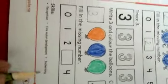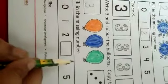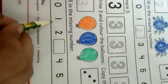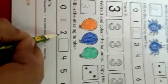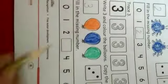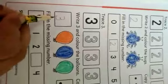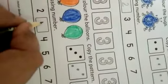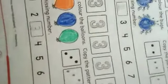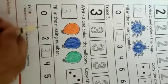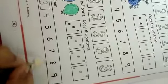So now come at the fill in the missing numbers. Zero, one, two and four. And our box is empty. So what will we write here? Which number is missing in this box? Number three. So what will we write here? Three. Zero, one, two, three, four, five, six, seven, eight, nine. Done.